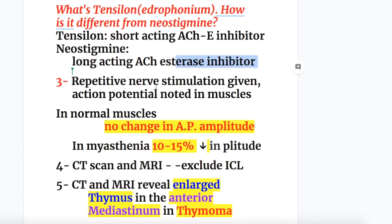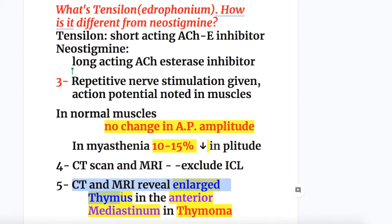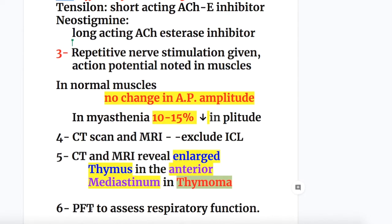Repetitive nerve stimulation is given and action potential is noted in the muscles. In normal muscle there is no change in action potential amplitude, whereas in Myasthenia Gravis there is a 10 to 15% decrease in action potential amplitude. CT scan and MRI are done to exclude intracranial lesions and reveal an enlarged thymus in the anterior mediastinum. Pulmonary function tests are done to assess respiratory function.